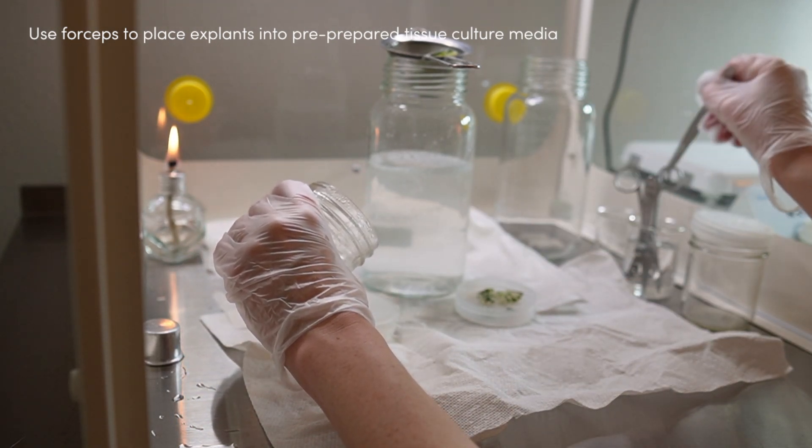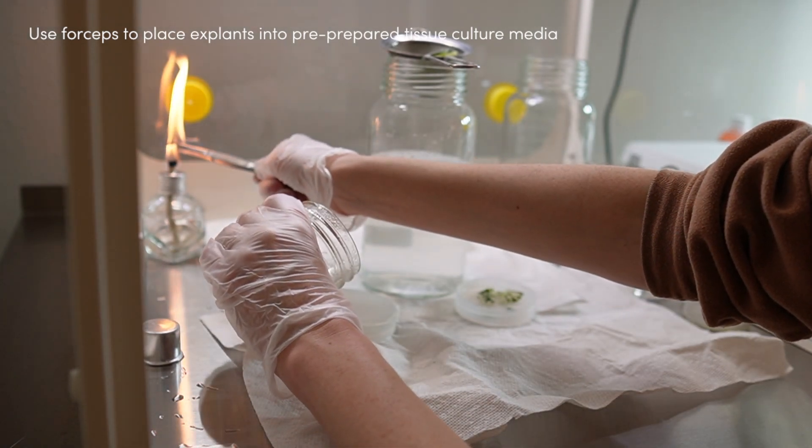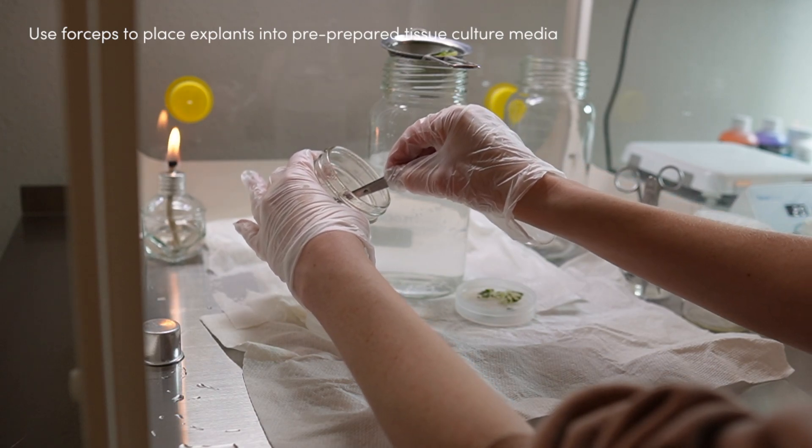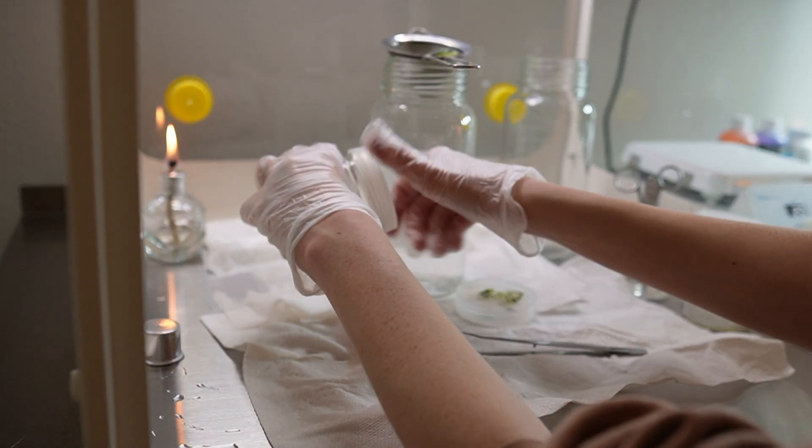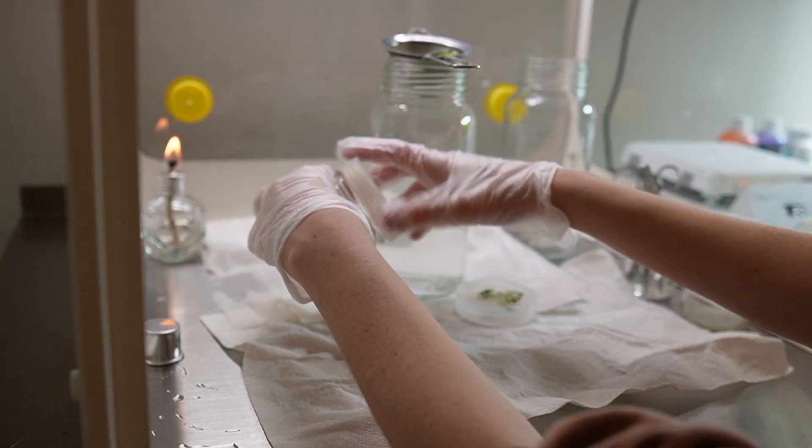I'm placing the explants into media that I had pre-prepared in another video. I highly suggest you watch it. Making media is the easiest part of the tissue culture process, in my opinion, because it doesn't really need to be done in a sterile environment since you autoclave it at the end.